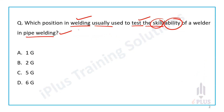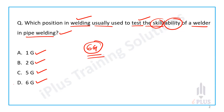If we are going to talk about the welding position, the options are: option A is 1G, option B is 2G, option C is 5G, and option D is 6G. We are going to talk about the ability to test the skill or ability of a welder.